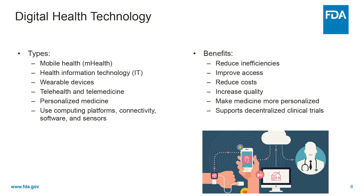There are, however, unique considerations from using digital health technologies, including data quality — how is this information going to be transmitted and recorded — and the need to develop data standards in some cases. How does one validate the various DHTs and data? Some of these can collect huge amounts of data, typically devices that continuously monitor a particular variable. How do we handle that — do we need to see all that data? How is it transmitted, and how does one understand the techniques and algorithms for processing and analyzing all this data, since it's not all done manually?